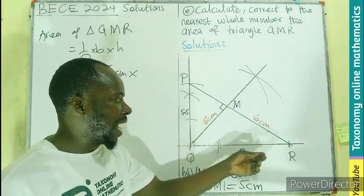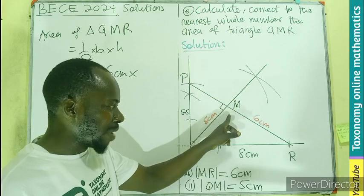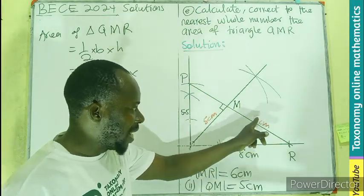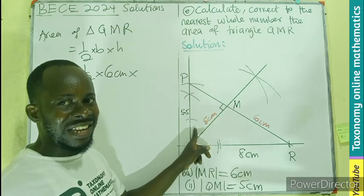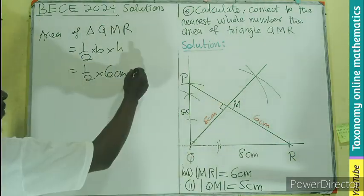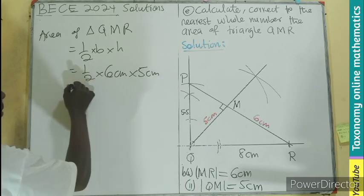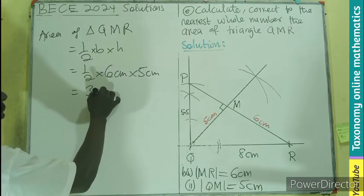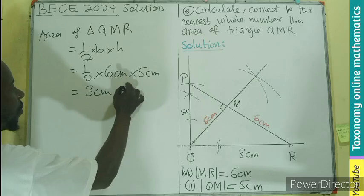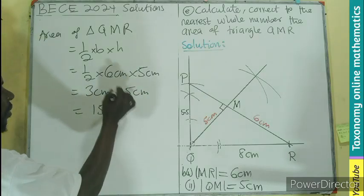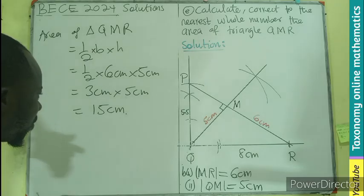That is why we are not going to pick the 8 as the base. If I'm picking here as the base, then the height must be perpendicular to that base. So if this is the base, it is perpendicular to this as the height. So if this is the height, that would be the base. So I have my 5 cm. Half of 6 is 3 times 5, and I'll be giving us 15 cm squared.